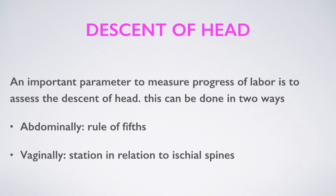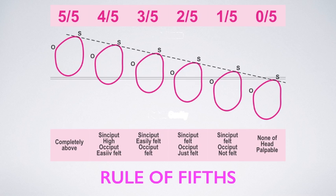An important parameter to measure the progress of labor is to assess the descent of the head. This can be done in two ways: abdominally by the rule of fifths, and vaginally by the relationship of the presenting part to the ischial spines, that is the station of the head. The rule of fifths refers to the palpable fifths of the fetal head felt by abdominal examination above the level of the symphysis pubis. When two-fifths or less of the fetal head is felt above the level of the symphysis pubis, this means that the head is engaged.